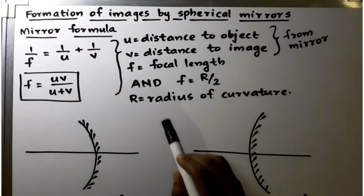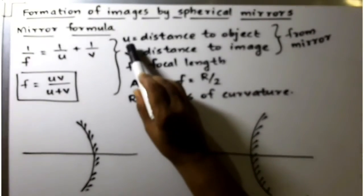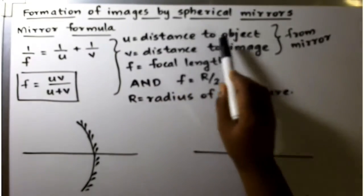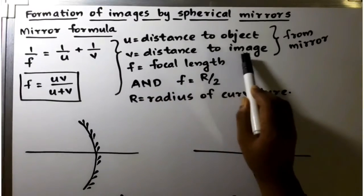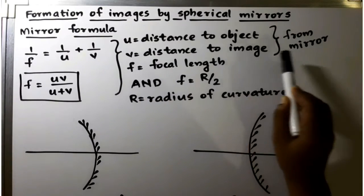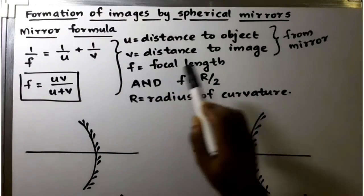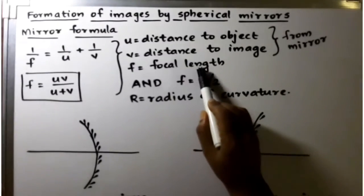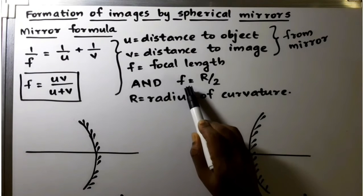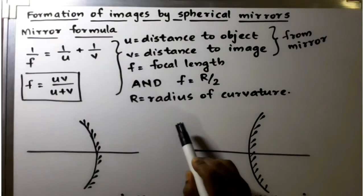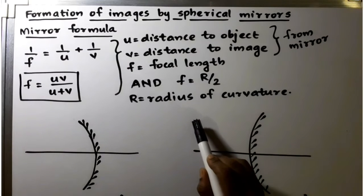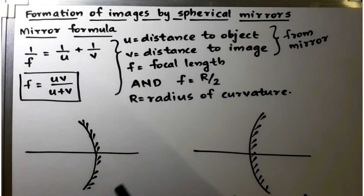u is the distance to the object from the mirror. v is the distance to the image from the mirror. f is the focal length. And f is equal to half of the radius of curvature of the spherical mirror.